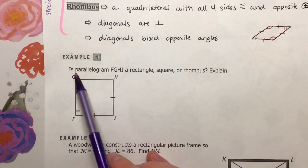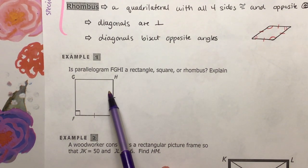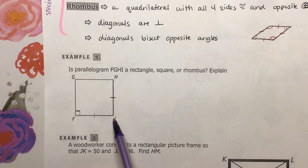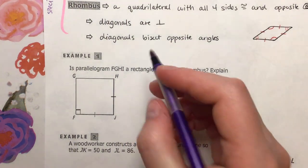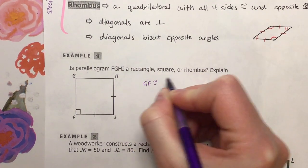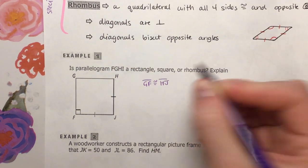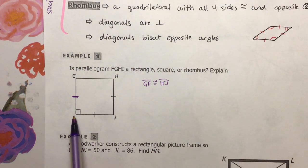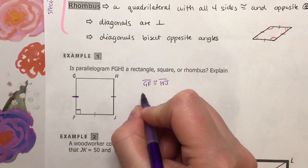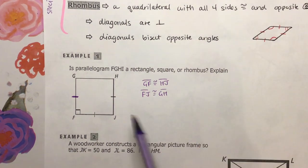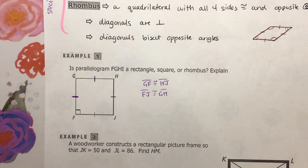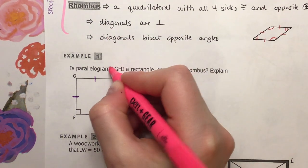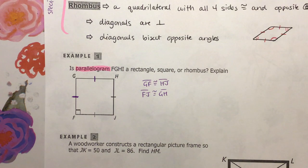Right off the bat, we know it's a parallelogram. So because it's a parallelogram, GF is congruent to HJ because opposite sides in a parallelogram are congruent. And then FJ is congruent to GH — once again, because it's a parallelogram. We are just applying properties of parallelograms, and we know that opposite sides are congruent to each other in a parallelogram.